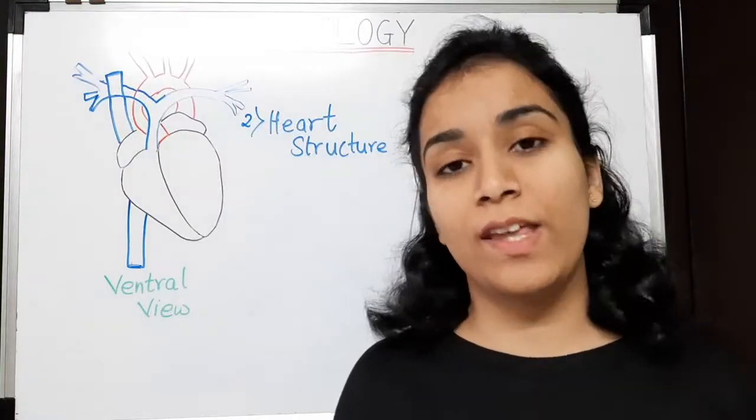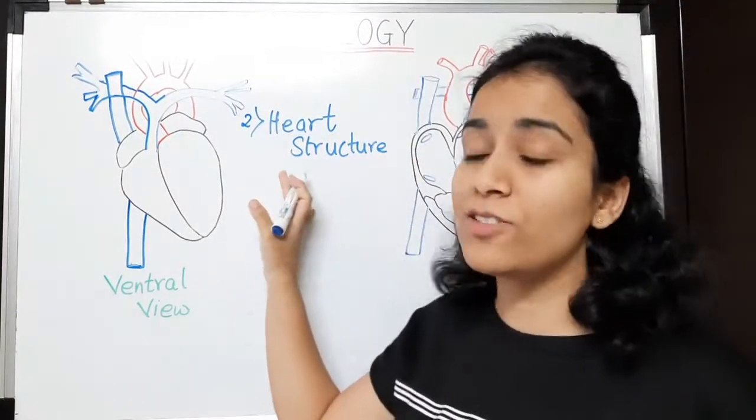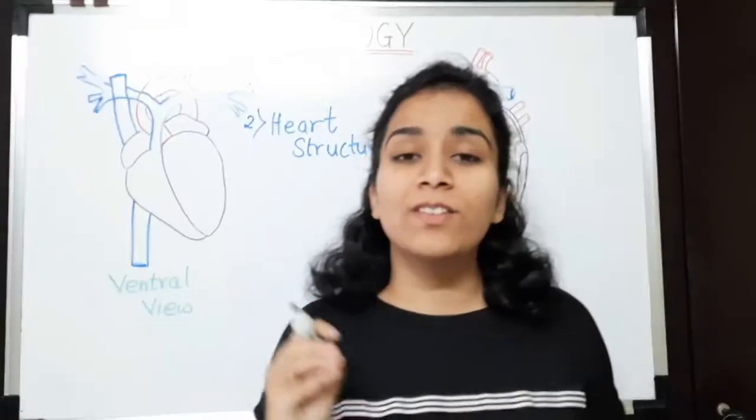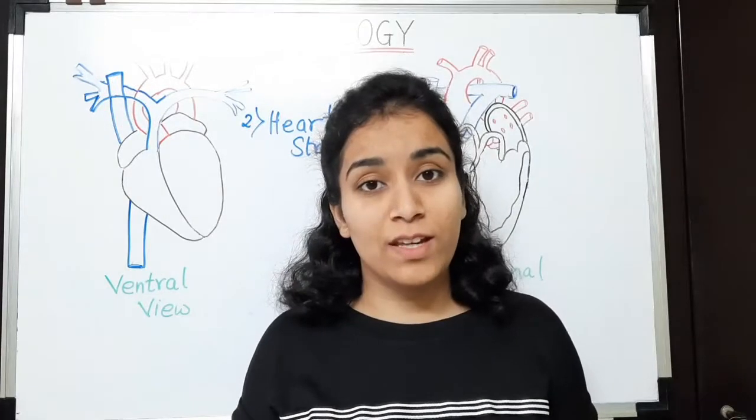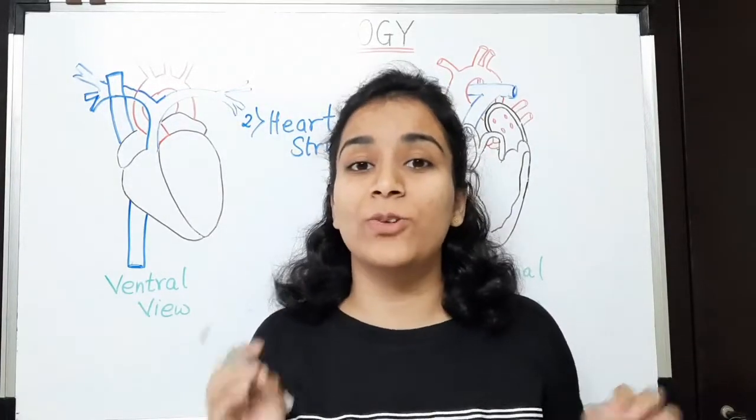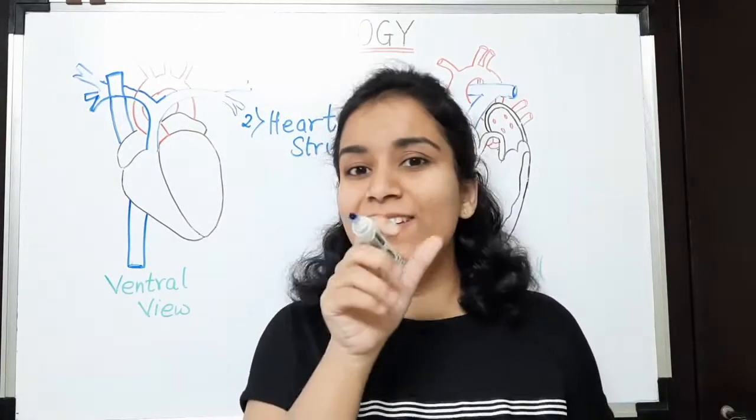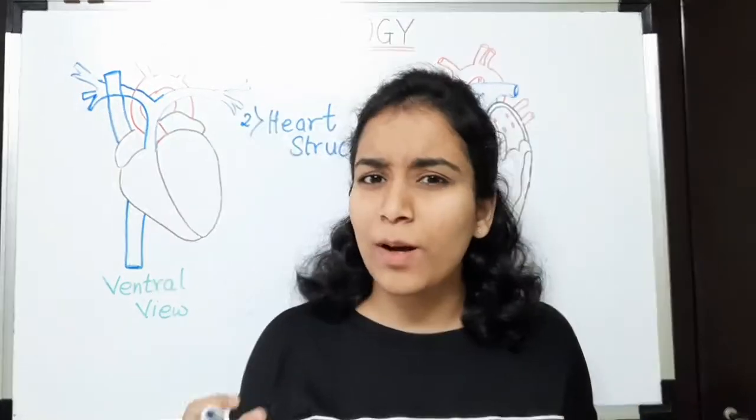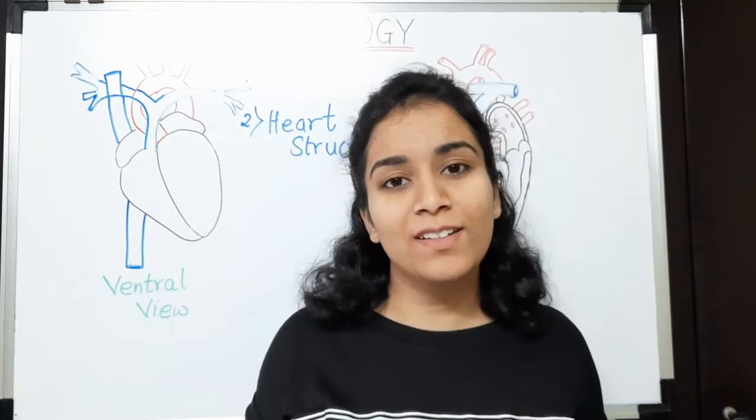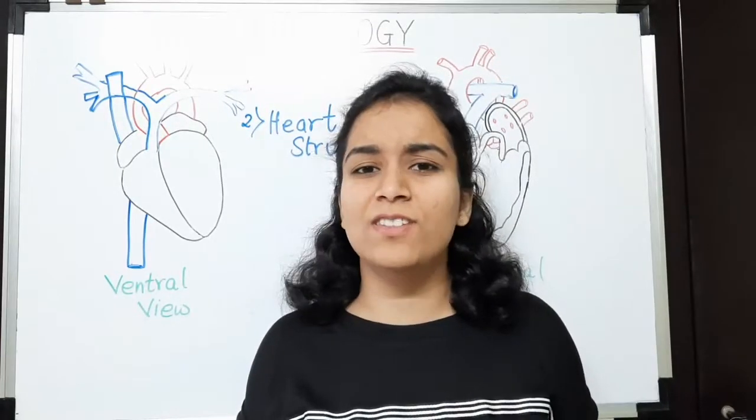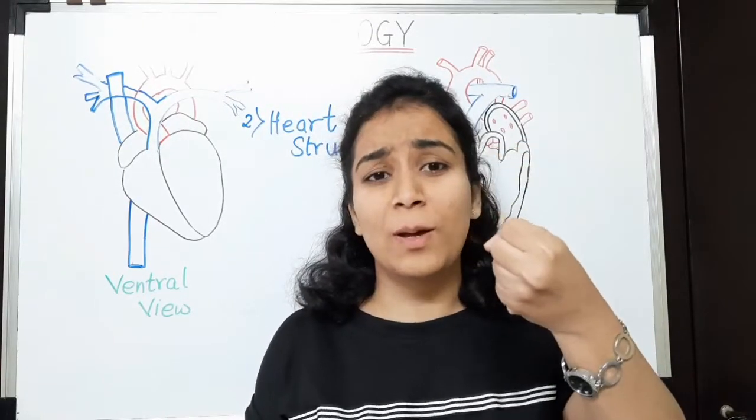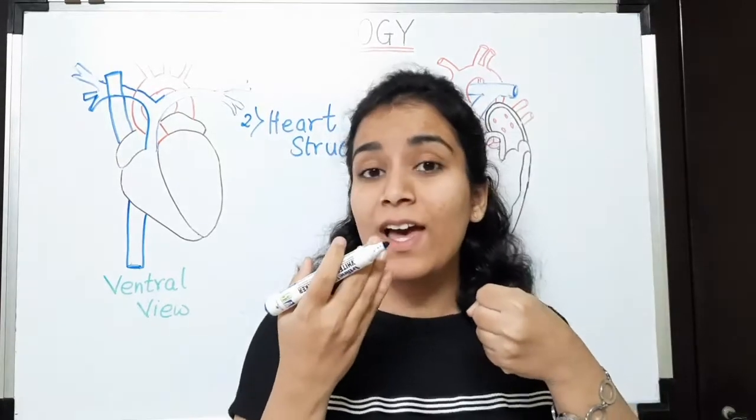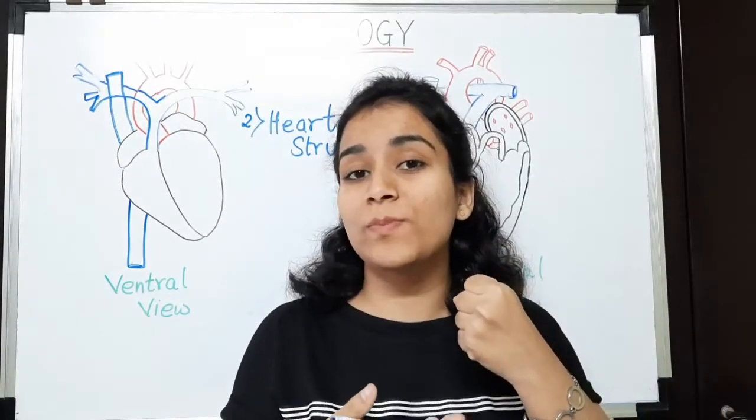Now, let's move on to our next point that is heart structure. So this heart is situated in middle of our thoracic cage, slightly tilted towards left. And do you know one amazing fact about a heart? Its size is just one's fist, narrow from apex and broad towards base.